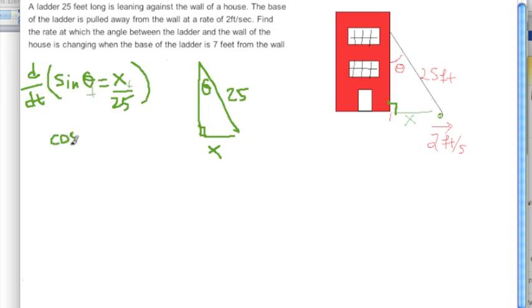So we get cosine of theta times the derivative of theta with respect to time - that's the chain rule. On the right-hand side, the derivative with respect to time of this expression is 1 over 25 (the constant comes out) and we get dx/dt.